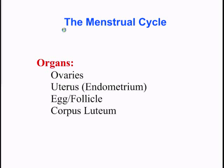The menstrual cycle is one of the more difficult parts of the reproduction system to understand. It requires you to understand the reproductive anatomy, the endocrine system, and also homeostasis.